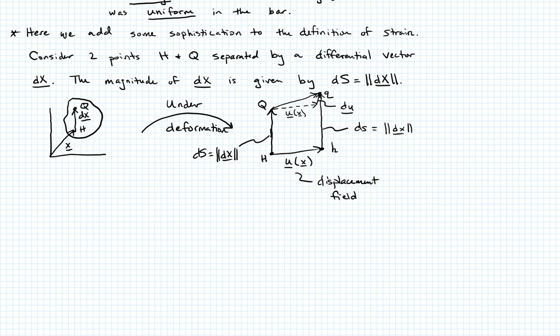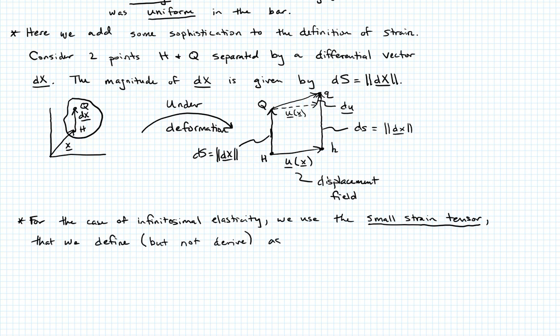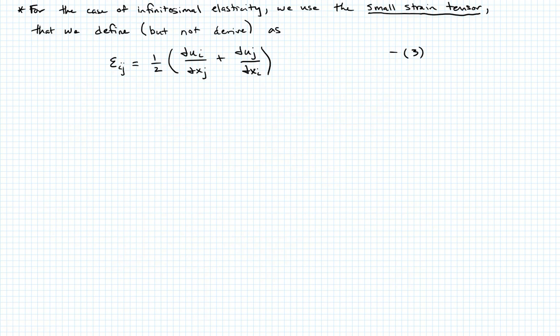I'm not going to go through a rigorous derivation of this. I'll just say that for the case of infinitesimal elasticity, we use what's called the small strain tensor that we're going to define but not derive as follows. We'll say, this is in tensor notation, epsilon IJ, acknowledging that strain is a tensor, will be equal to one half times the partial of UI with respect to J, plus the partial of UJ with respect to I. And we'll call that equation three. So that's what I want you to know about the small strain tensor. I'll give you a couple remarks here.